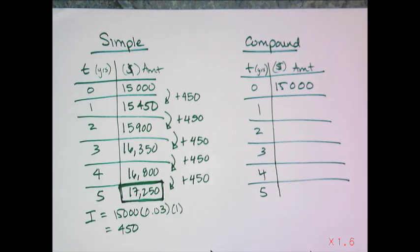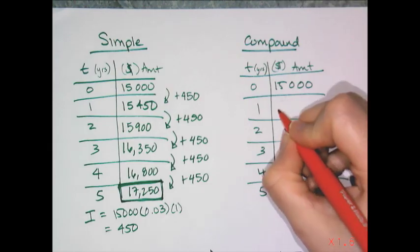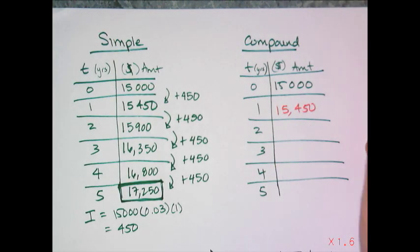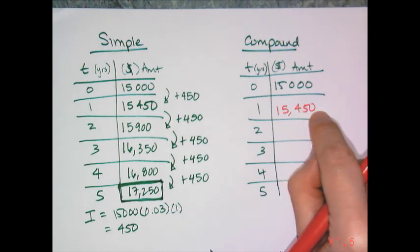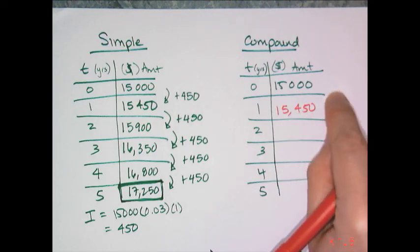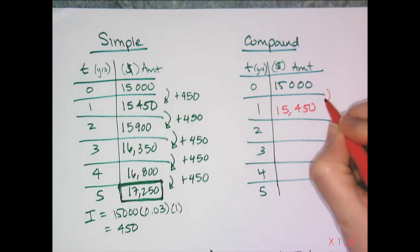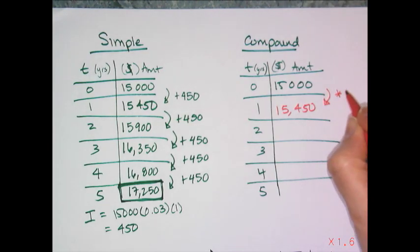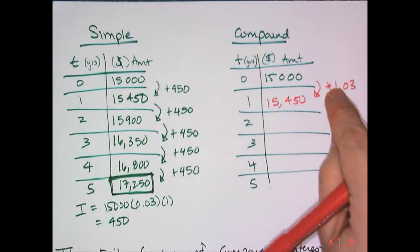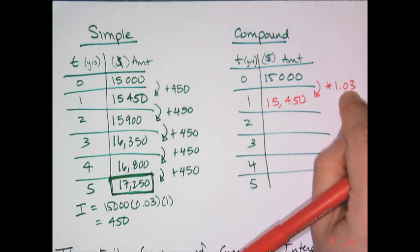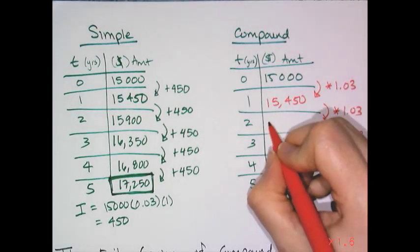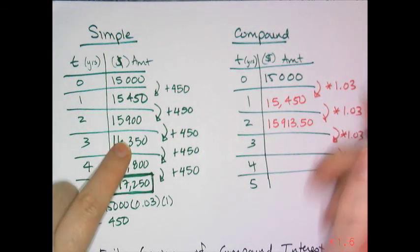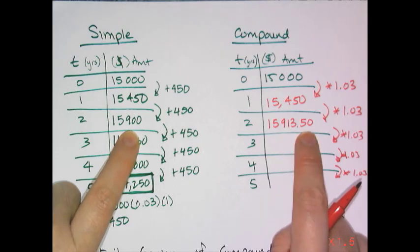Compound interest starts the same — after year one you still owe $15,450. But now instead of adding 3% of $15,000, I add 3% of $15,450, so that $450 of interest gets factored into the next calculation. Instead of adding a constant, I multiply by 1.03 each time. After year two it's $15,913.50 — already $13.50 more than simple interest.